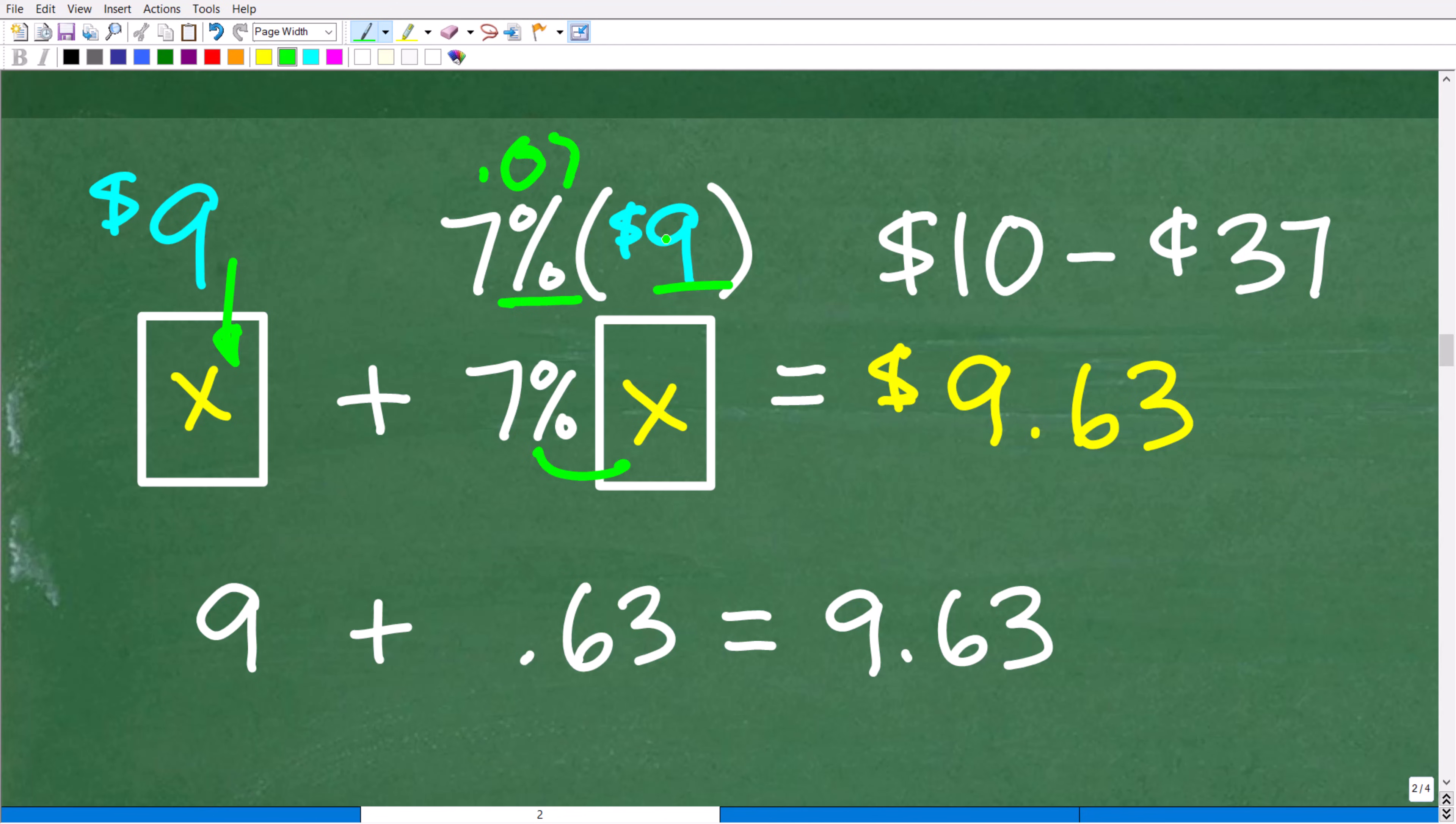So 7% of 9 is going to be 0.07 times 9. Now, of course, if you have a calculator, just kind of follow along. But 0.07 times 9 is 63 cents or 0.63. So we have 9 plus 0.63 is 9.63, which is $9.63. And of course, that is the difference between giving the cashier $10 and getting back 37 cents in change.